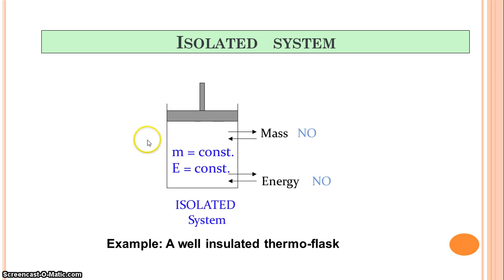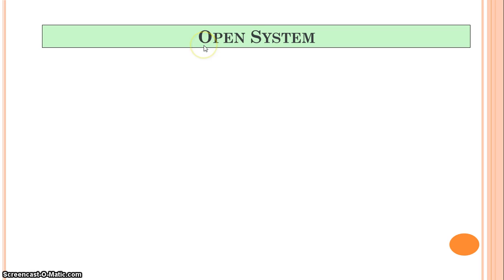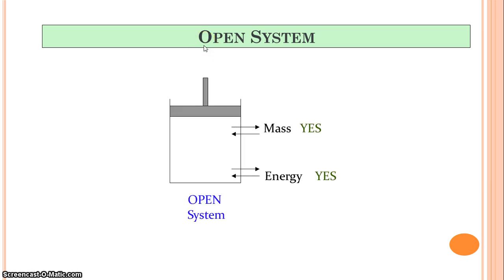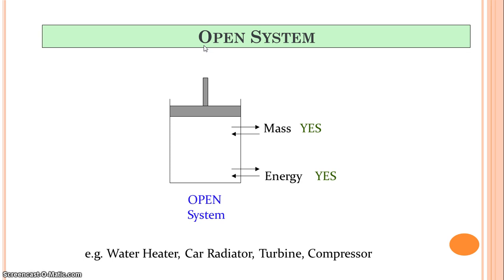In the thermos example, the coffee is your system, outside is your surrounding, and the flask wall is your boundary. There is no mass transfer or energy transfer in the case of an isolated system. The third type is an open system — these are systems in which there is both energy transfer and mass transfer. Examples include a water heater, car radiator, turbine, compressor, or simply water flowing through a pipeline. Water has energy and mass, so water flowing in a pipeline or steam flowing in a turbine are open systems.